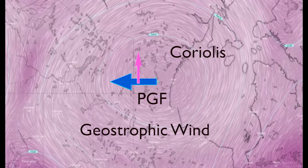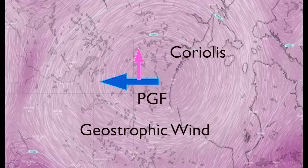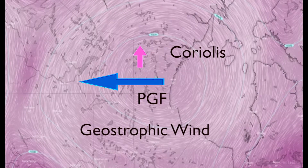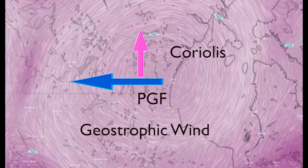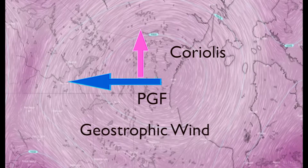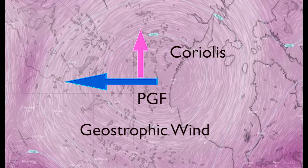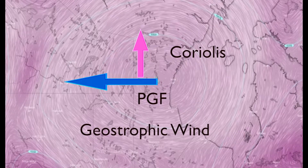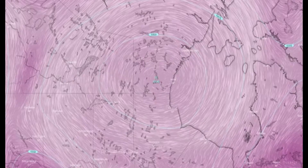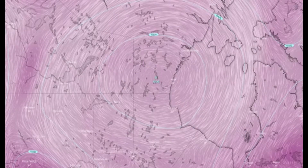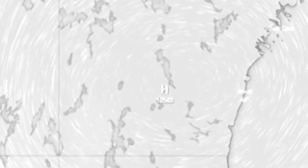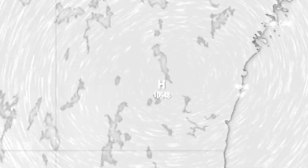At this point, the wind will be blowing parallel to the isobars. When this happens, the wind is referred to as Geostrophic Wind. Winds in nature are rarely exactly geostrophic, but to a good approximation, the winds in the upper troposphere can be close.